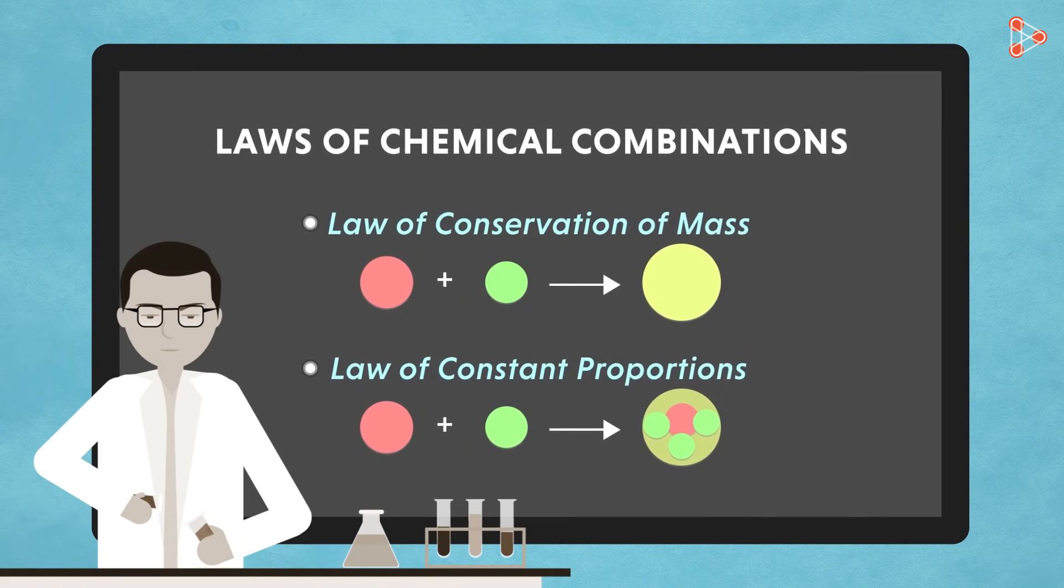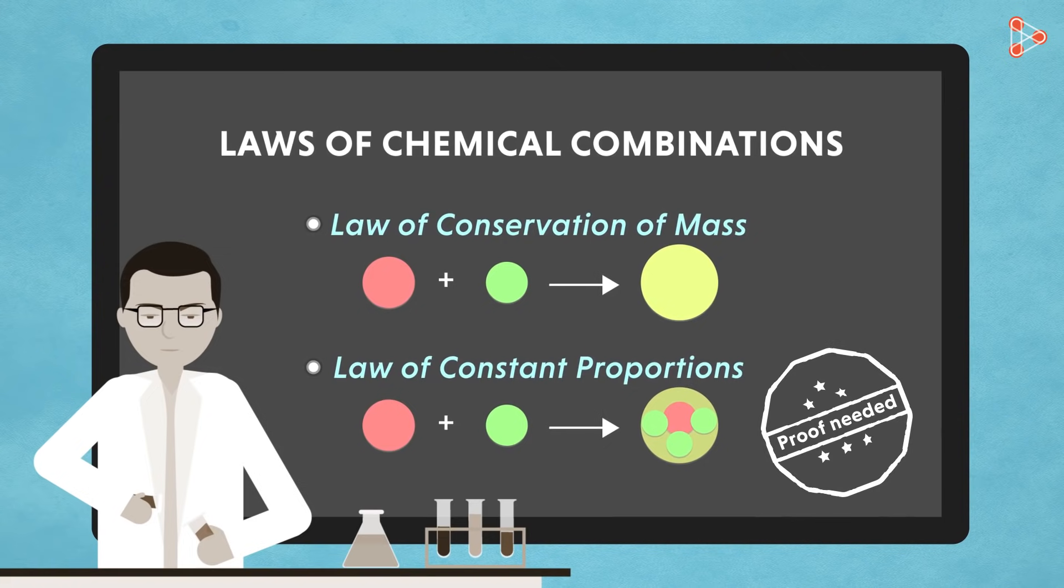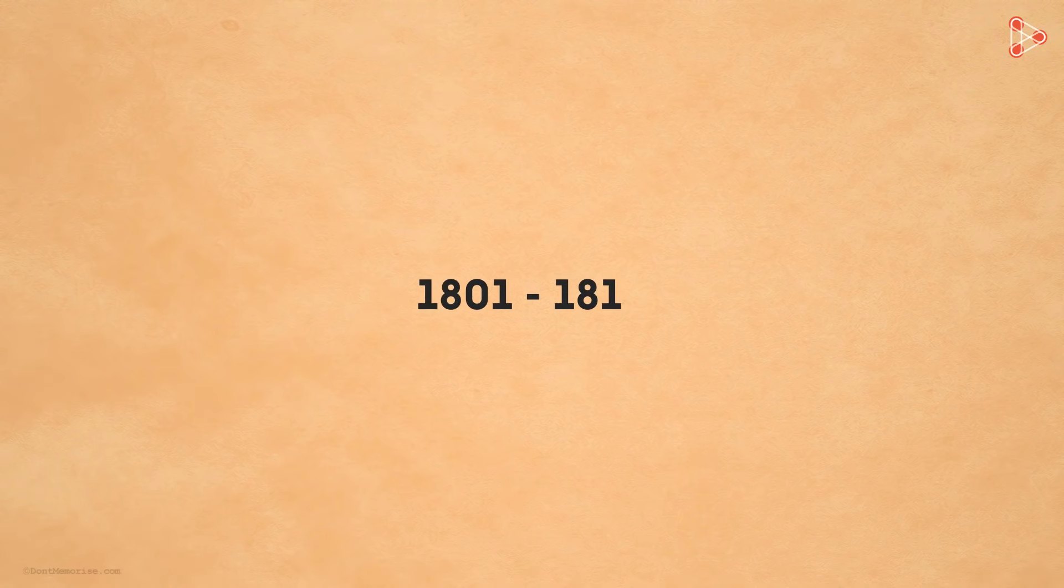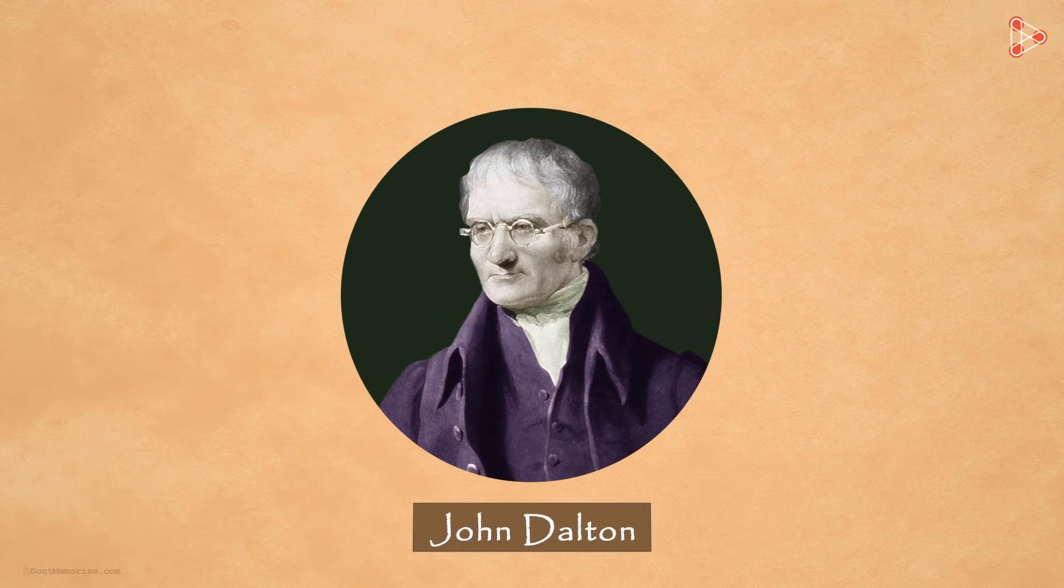However, the laws still needed experimental evidences and proofs. Only then would they be accepted. It was around the first decade of the 19th century that a chemist and physicist from England named John Dalton was successful in answering many questions.